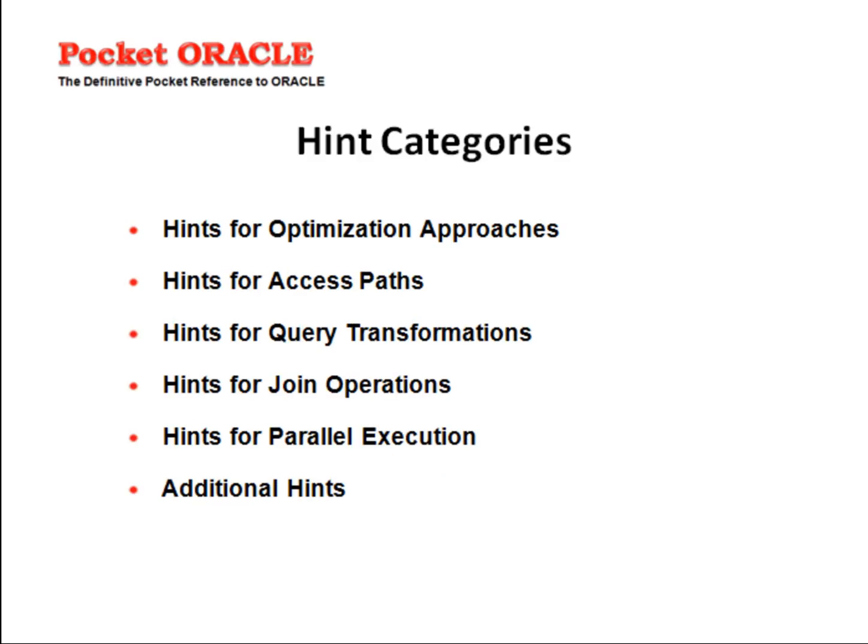Hints in Oracle can be categorized as: hints for optimization approaches, hints for access paths, hints for query transformations, hints for join operations, hints for parallel execution, and additional hints.